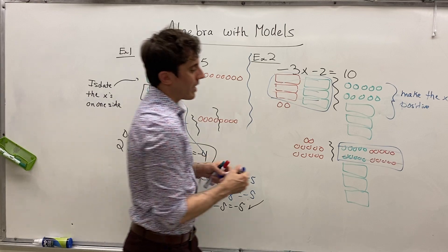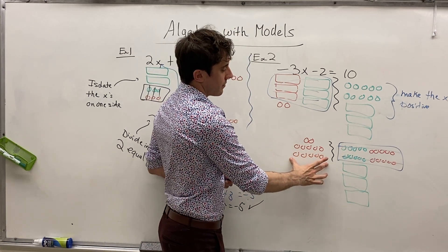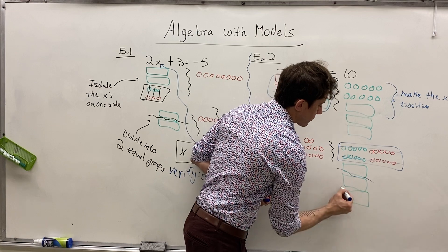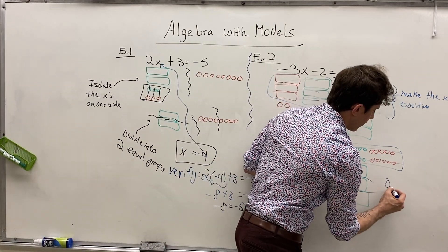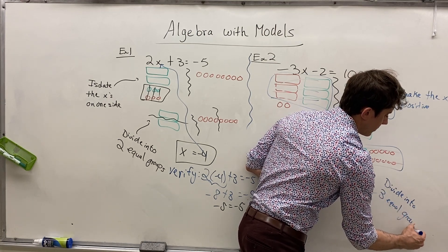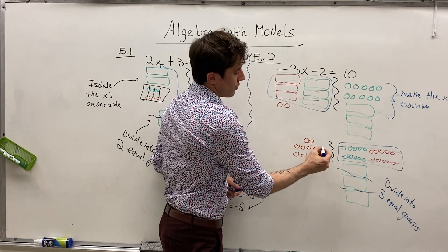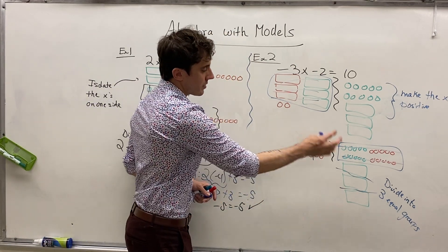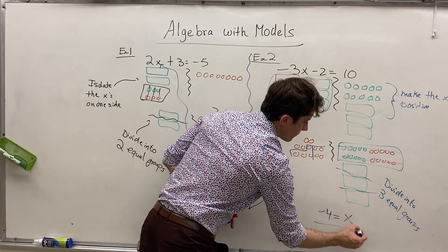Now we have three positive x's by themselves on the right side, and twelve red circles on the left side. Since three positive x's are equivalent to twelve red circles, we divide into three equal groups, doing the same thing on both sides. Dividing twelve circles into three equal groups gives us four in each group. So in each group we have one positive x and negative four — that is our solution.